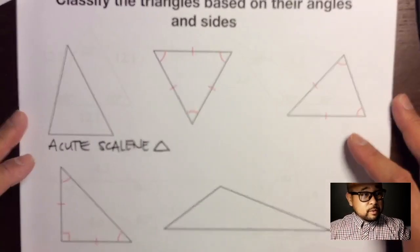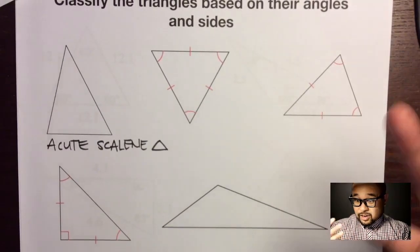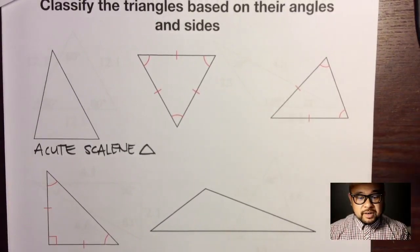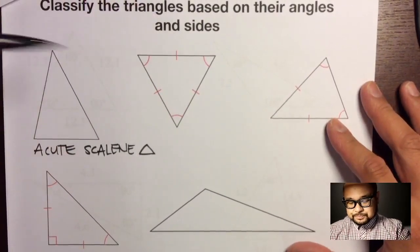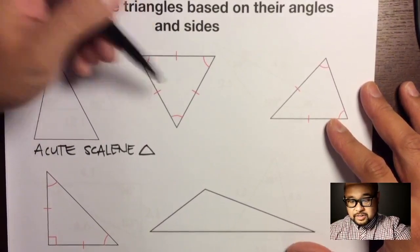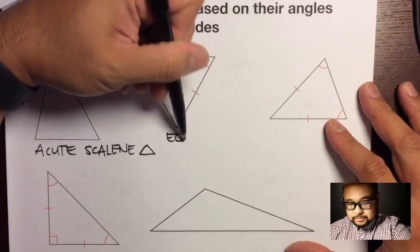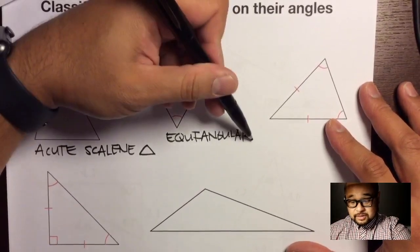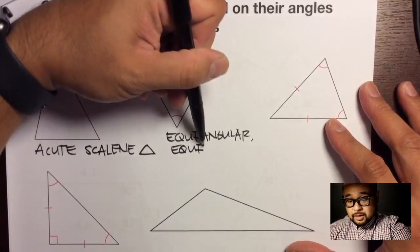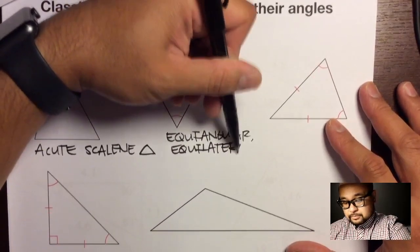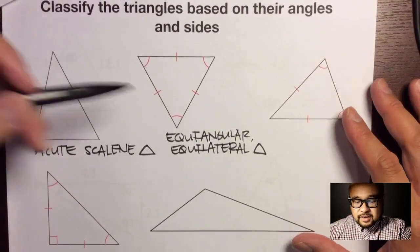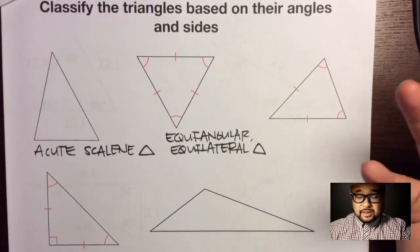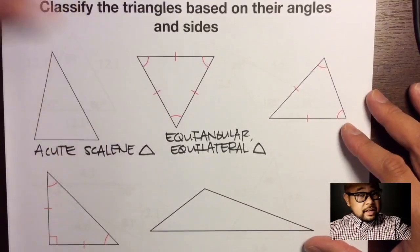For the next triangle, all of the angles are congruent — there are matching arcs — so this would be equiangular. All the sides are also congruent, so it is also equilateral. Fun fact: if a triangle is equilateral, it's automatically equiangular, and vice versa. That relationship is only true for triangles.